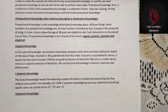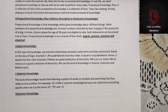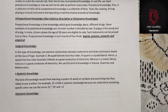Next is systematic knowledge. This kind of knowledge derives from learning a system of words or symbols and examining how they relate to one another. For example, 'one plus two equals three' is systematic knowledge because we understand something specific when we use the terms 'one,' 'two,' 'three,' and 'plus.'